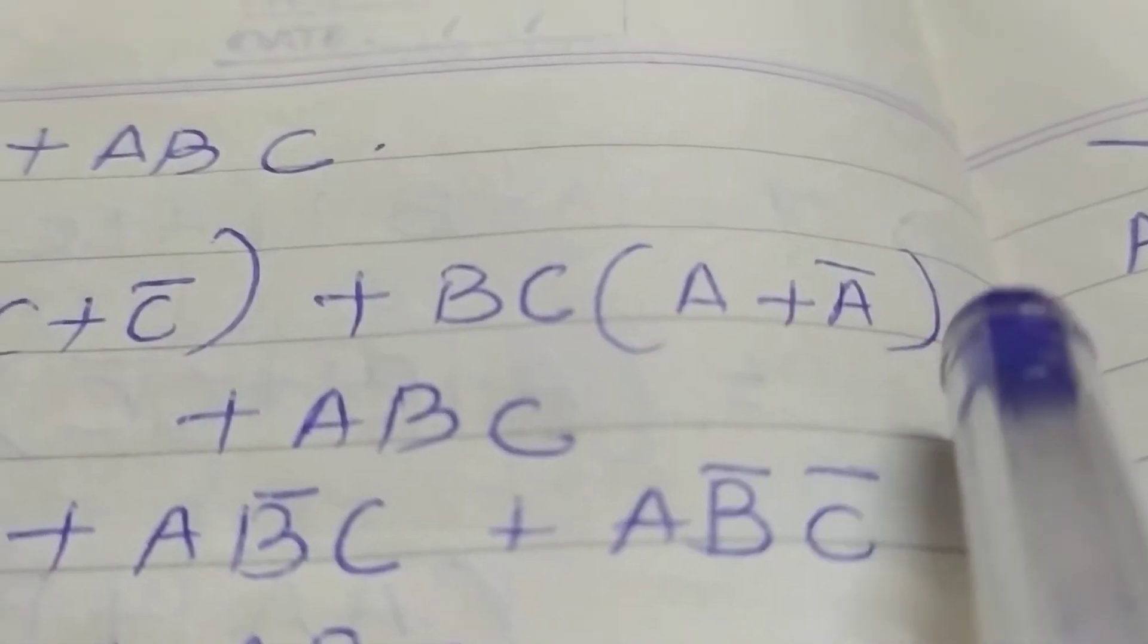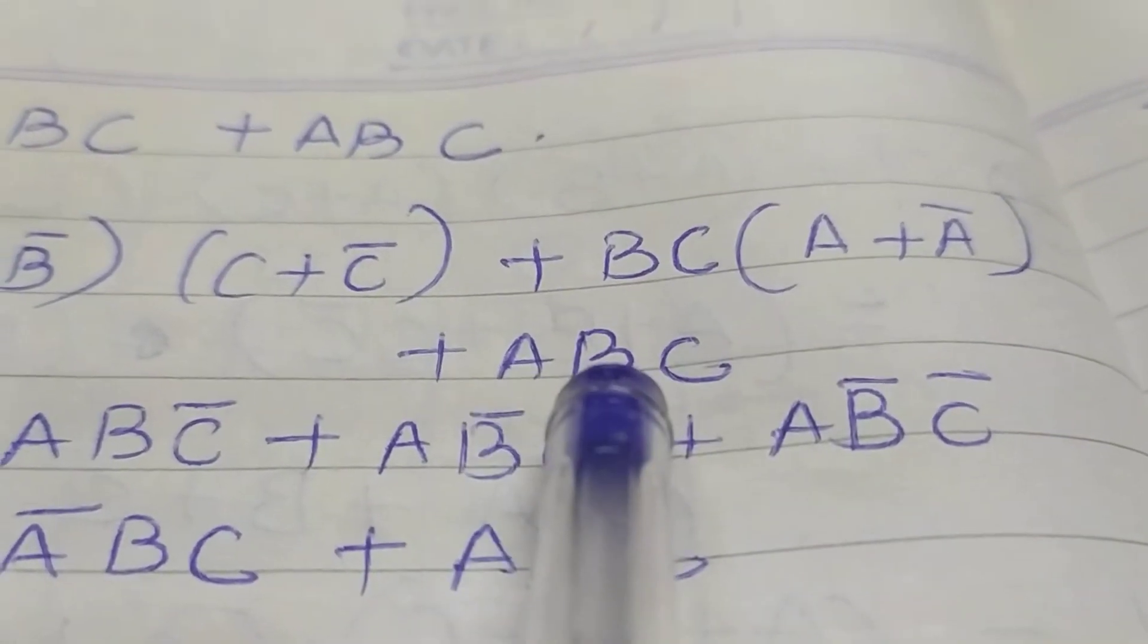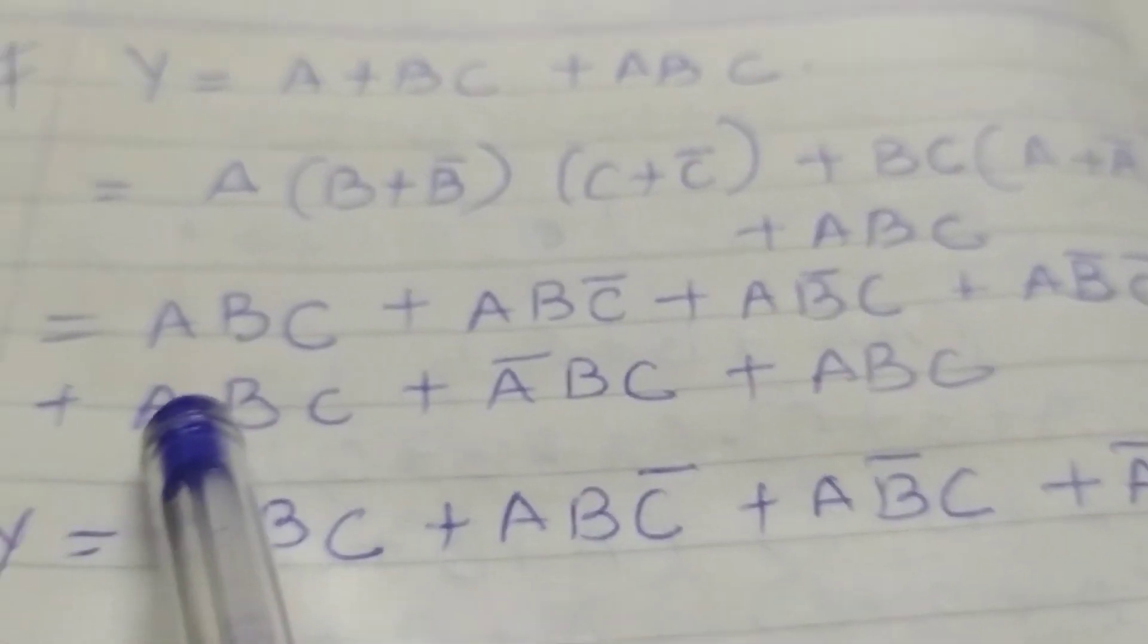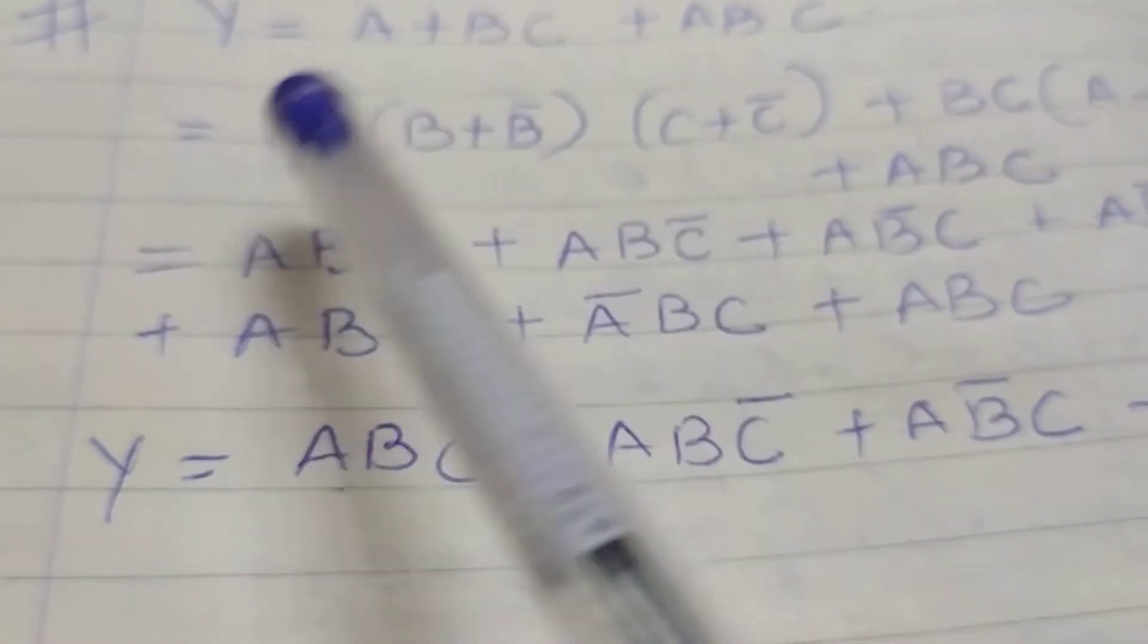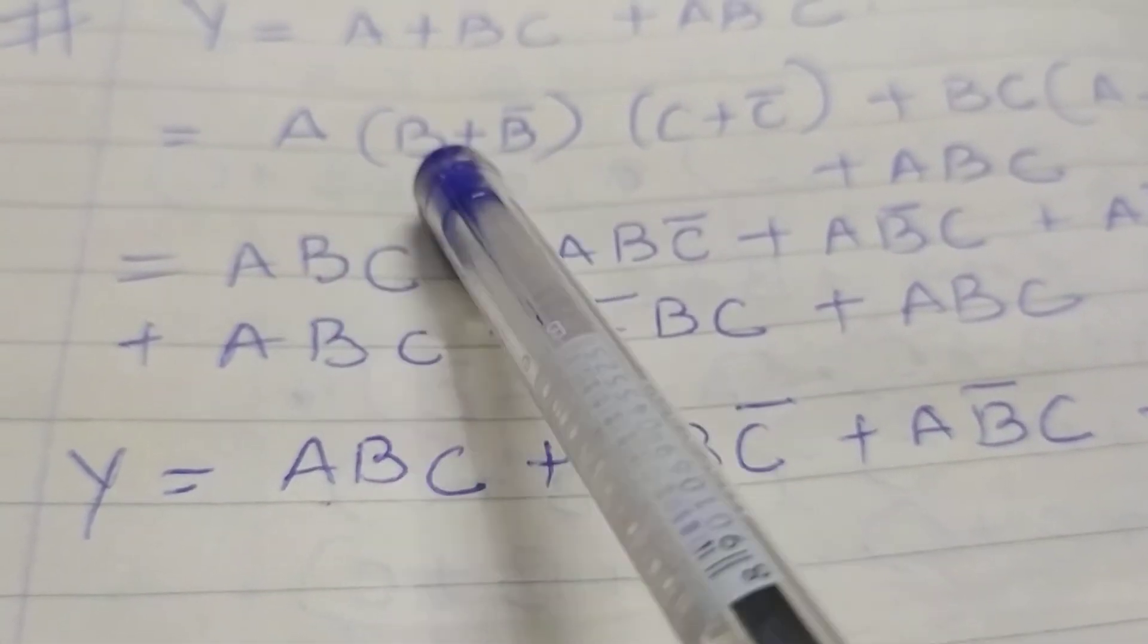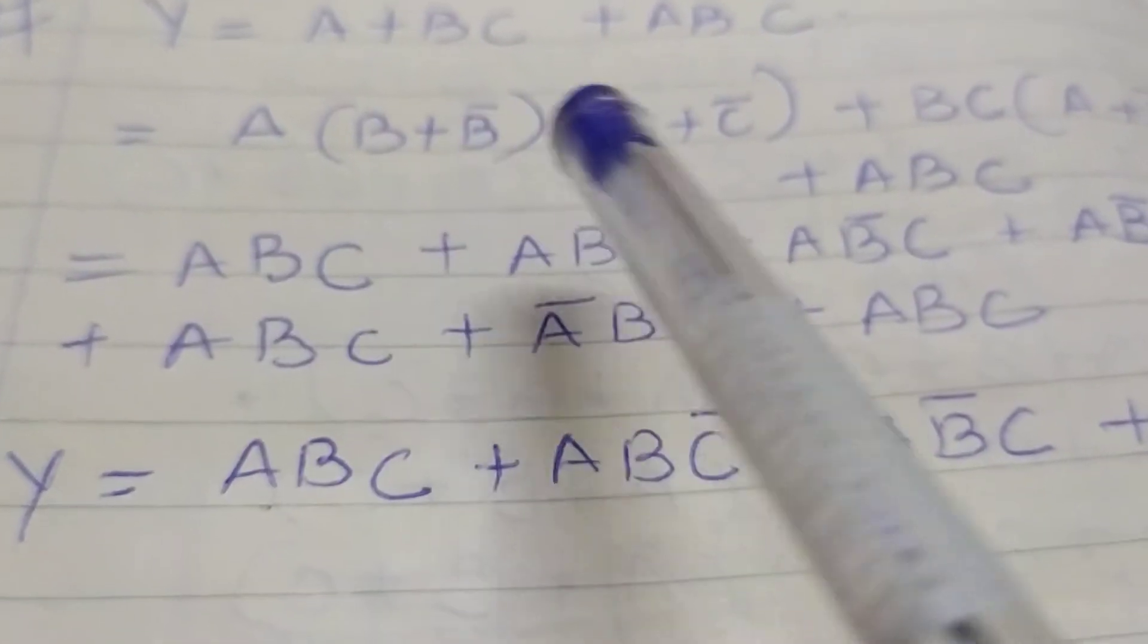So you will use A plus A bar. Third one is no need of doing anything, just leave it as it is. Now the next step is to expand A into B into C, then ABC, then A into B into C bar, then A into B bar.